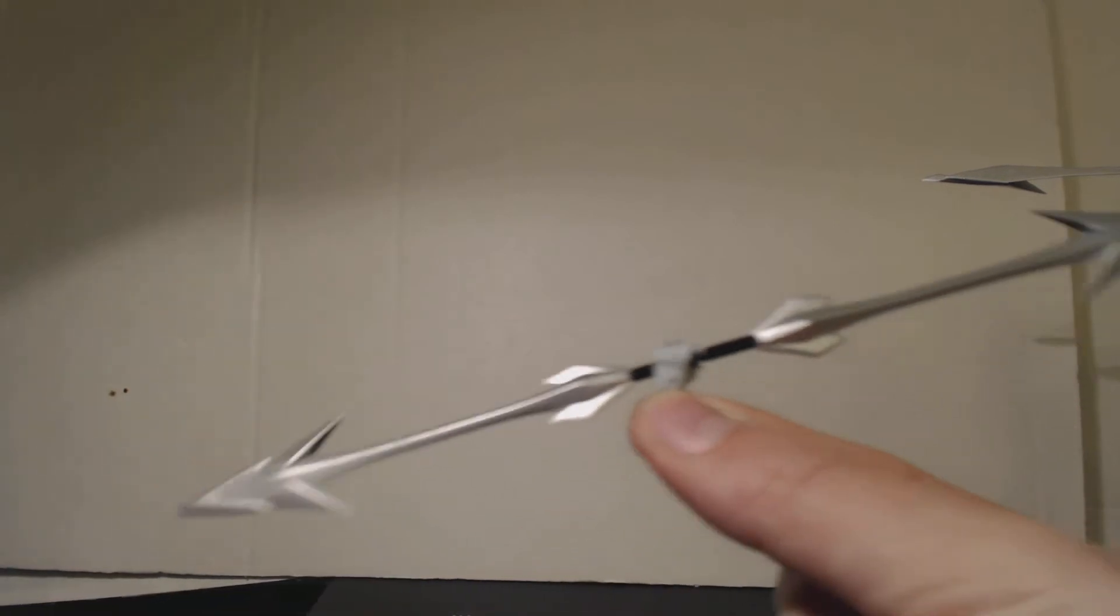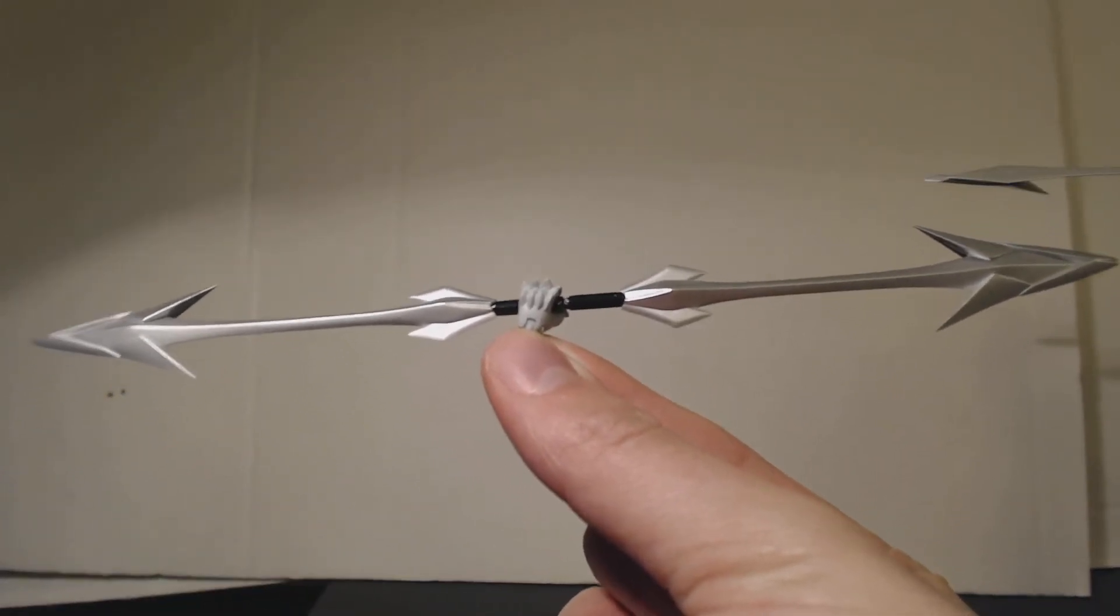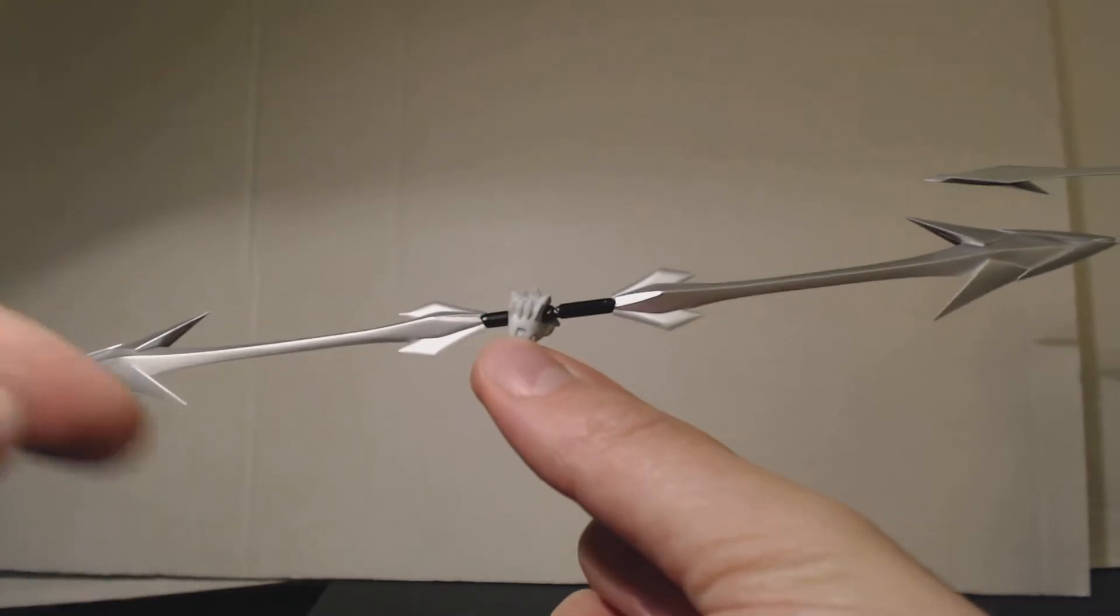So moving on, we have the lance. Obviously, this is Tekkaman Evo's lance, and it looks slightly different than Tekkaman Blade's in the sense that it's got more sharp pointy ends and it's also a lot bigger.